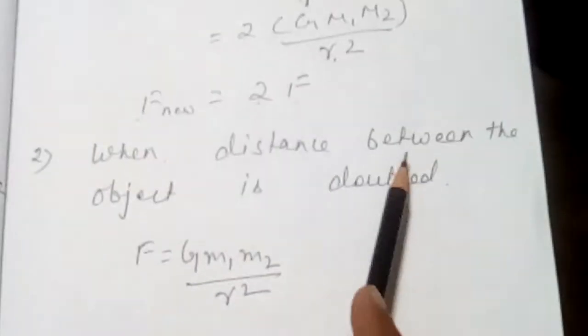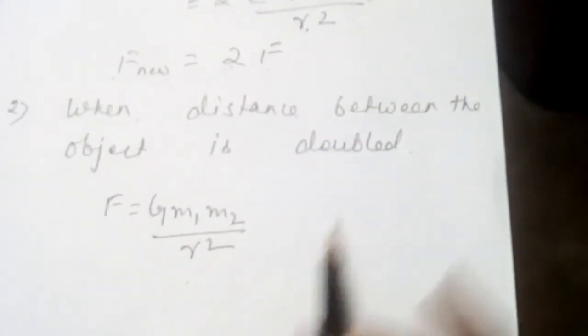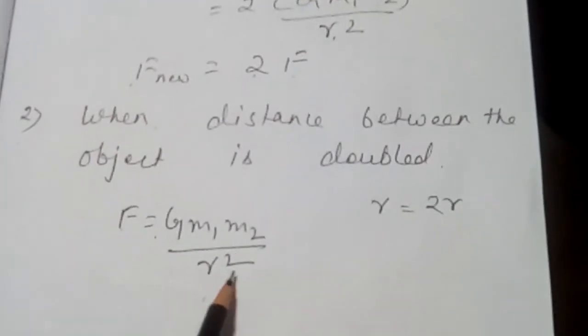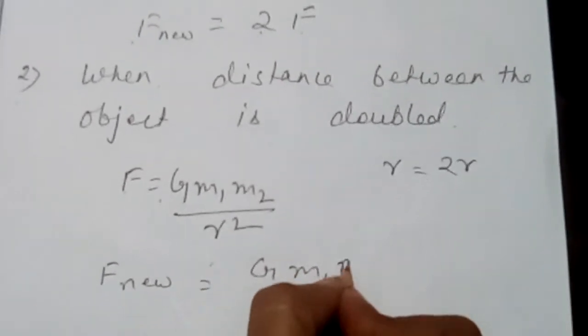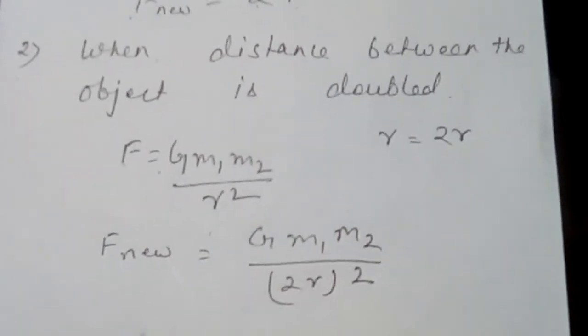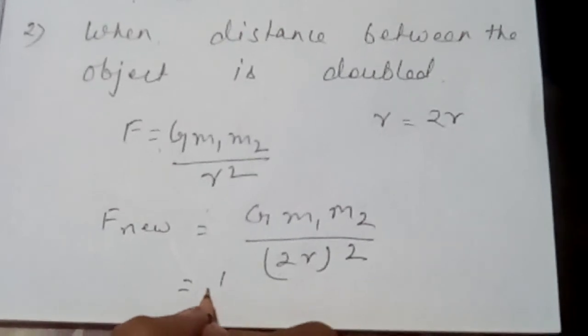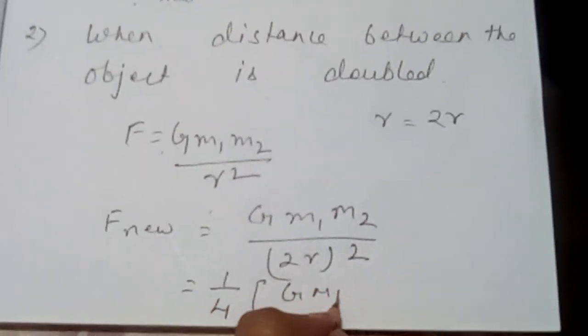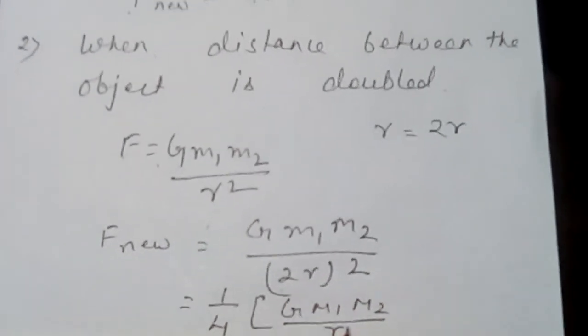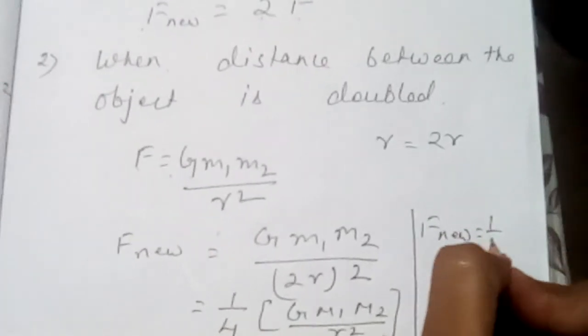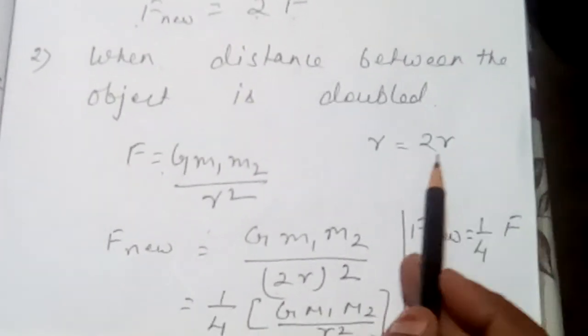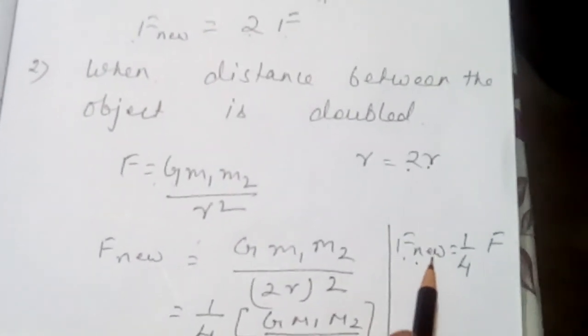Come for second question: when distance between the object is doubled. So here what? Let us take R as 2R. We know F is equal to G M1 M2 by R square. So let us take F new for distance doubled. So we can write G M1 M2 by 2R whole square. So it can be written as 1 by 4 G M1 M2 by R square. So you write this as F new is equal to 1 by 4 F. So here you have seen that when we are increasing the distance, force of attraction decreases. That means it will decrease by 1 by 4th.